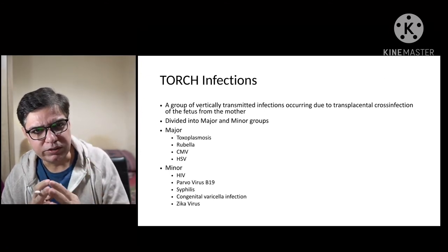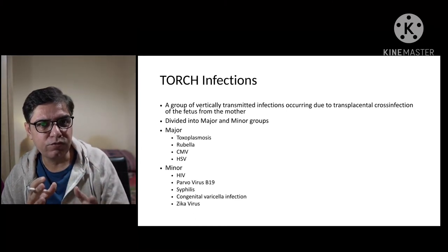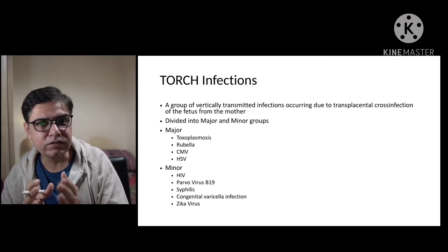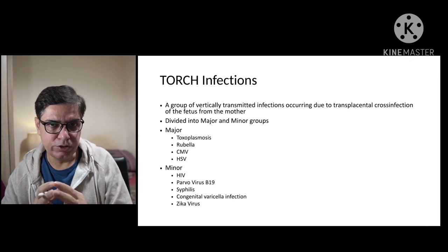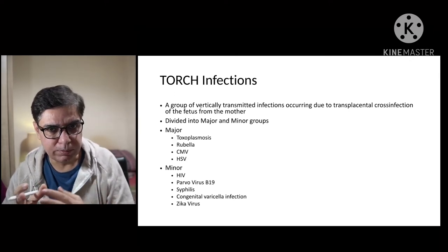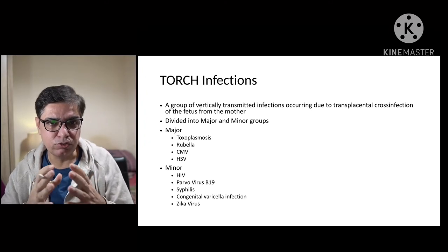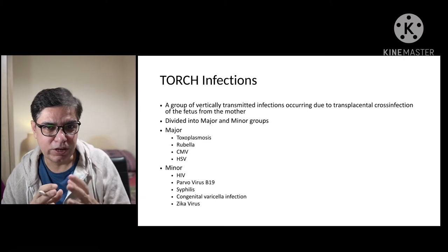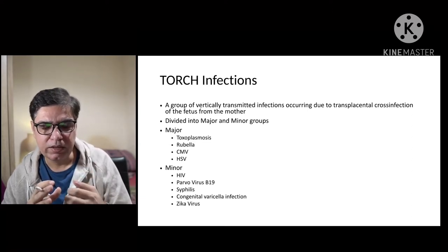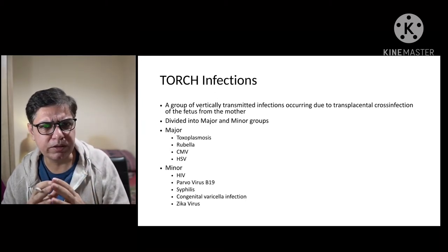TORCH infections are vertical infections transmitted from mother to fetus in utero, classified into two groups: the major group and the minor group. The major group is what the TORCH acronym represents: TO stands for toxoplasmosis, R stands for rubella, C stands for cytomegalovirus, and H stands for herpes simplex viral infections.